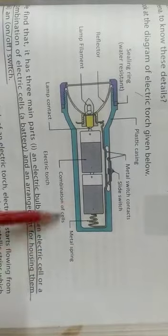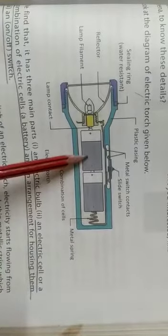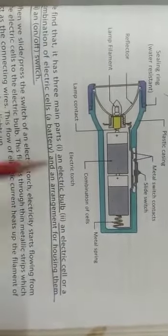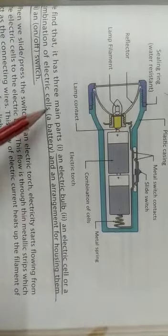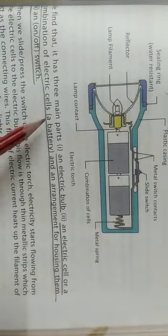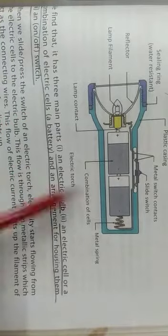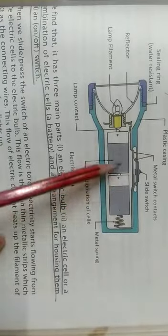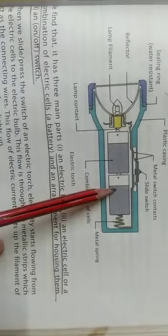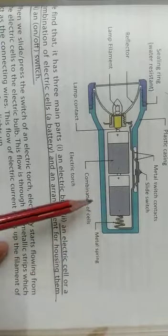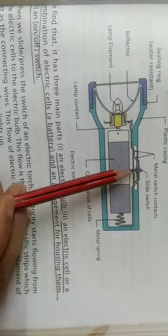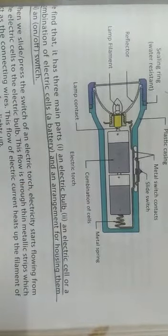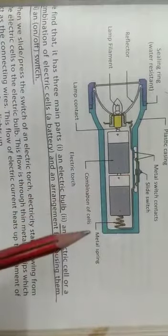This is a combination of cells that forms a battery. Three main parts we find here: electric bulb, electric cell or combination of cells, and an on-off switch. When the switch is pressed, electricity will start flowing through the electric cell to the electric bulb.